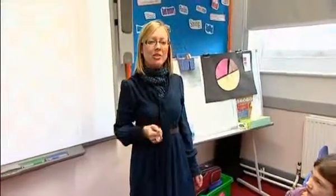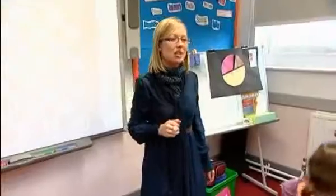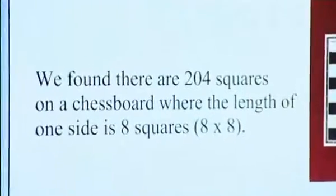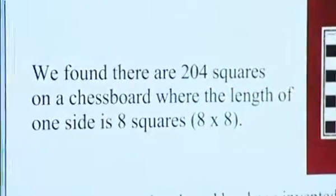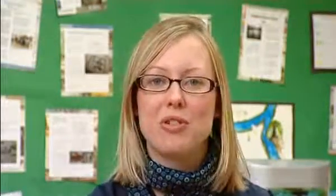Who can remind me and the rest of the class what we did? We had to find out how many squares there were in the chessboard, including squares made from four, nine and all of the different ones. Ultimately, I wanted the children to discover if a chessboard was made that was 25 squares in length, how many squares they would find.